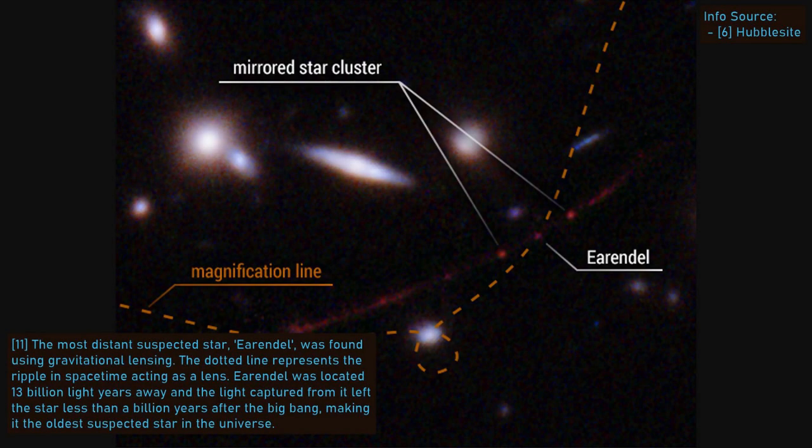Gravitational lensing can help astronomers peer deeper into the furthest depths of the universe. As very distant galaxies are so faint, when a gravitational lensing of one of them occurs, it gives astronomers an opportunity to study them in far greater detail than they would otherwise be able to.